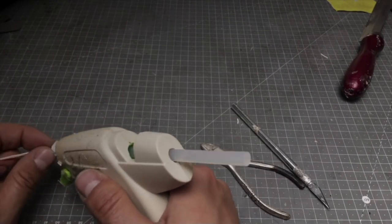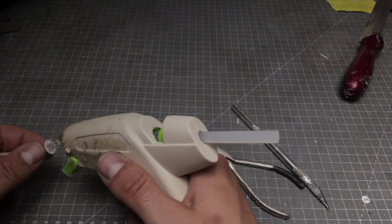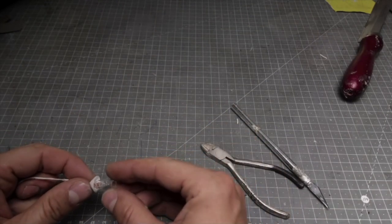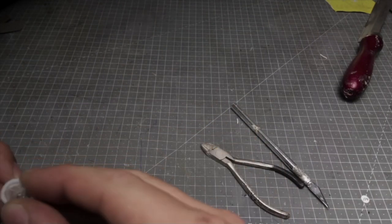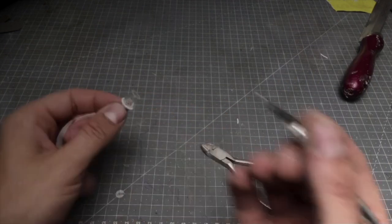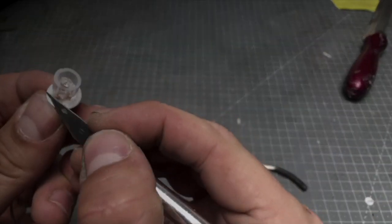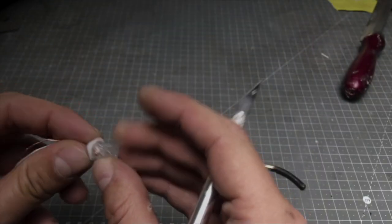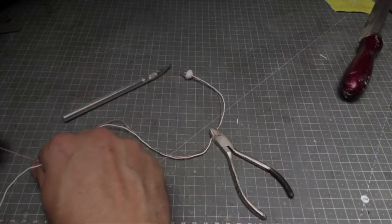After everything is working we can add the casing to the light. I'm just pouring some hot glue inside and then sticking the plastic tube on top. Then removing excess with the X-Acto knife. And then just checking one more time if everything is working.